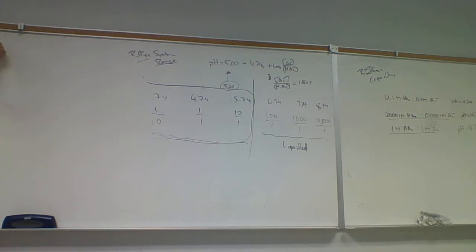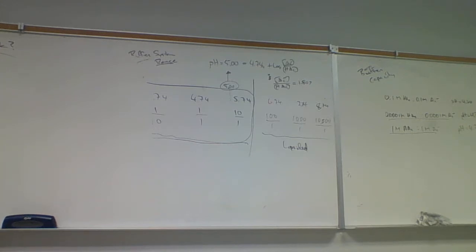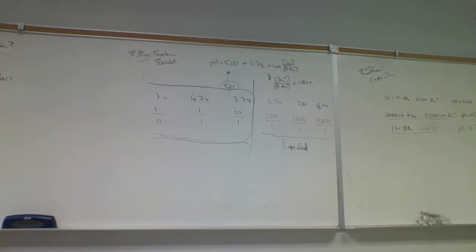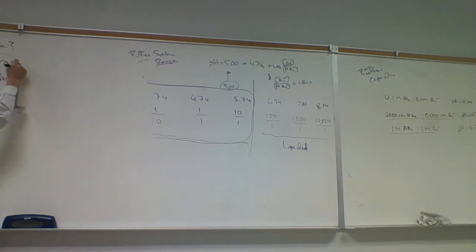Let's do some standard buffer calculations to see if buffers work and how they work. They're supposed to resist pH changes. Let's take 10.00 milliliters of pure water — pH 7 — and add one drop of 6 molar HCl. One drop is about 0.05 milliliters, since there are about 20 drops per milliliter.